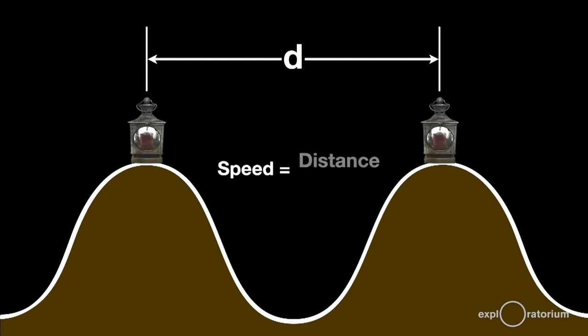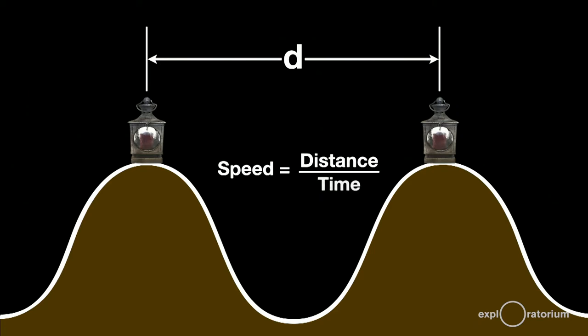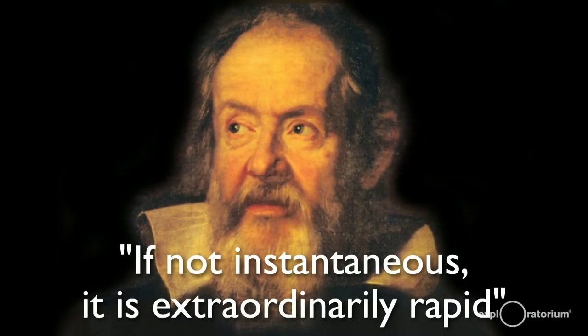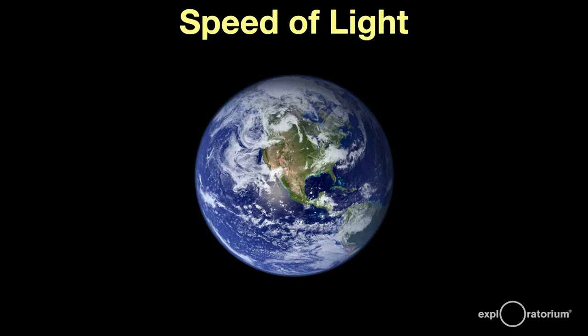Galileo planned to measure the time the light took to travel back and forth between the two hills. If he knew the time and the distance, he could figure out the speed of light. He had no idea how fast light traveled or that his experiment was really doomed to failure, but only because he really lacked the technology. Galileo concluded that if not instantaneous, it is extraordinarily rapid, and that is a valid scientific statement.